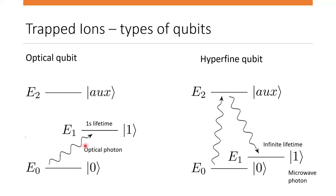For an optical qubit, the energy gap between the two energy levels is in the optical range of the photon. The drawback is that it has a pretty short lifetime of about one second, though in most cases this is sufficient for calculations, which are typically in the nanosecond range. On the other hand, the hyperfine qubit has a basically infinite lifetime for the excited state, but the energy gap is in the microwave range, so it cannot be excited with an optical photon. The type of qubit depends on the atom — for example, calcium-40 is an optical qubit while calcium-41 is a hyperfine qubit.